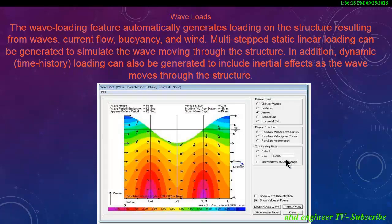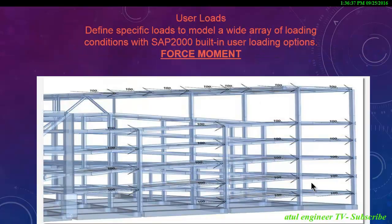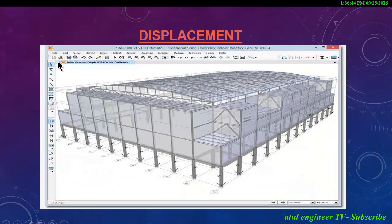The wave loading feature automatically generates loading on the structure resulting from waves, current flow, buoyancy and wind. Multi-step static linear loading can be generated to simulate the wave moving through the structure. In addition, dynamic time history loading can also be generated to include inertial effects as the wave moves through the structure.